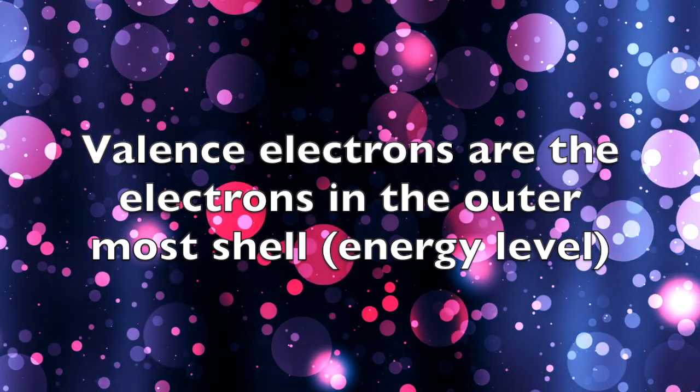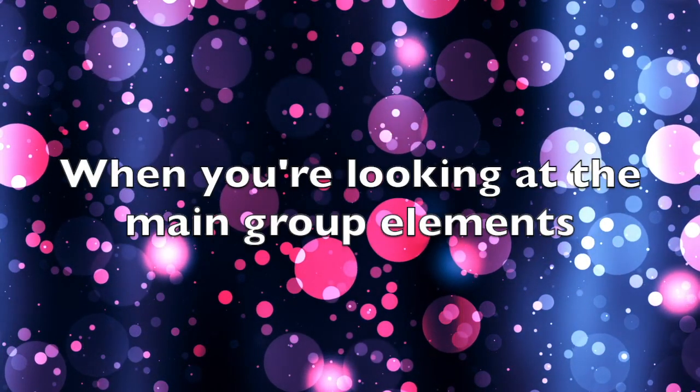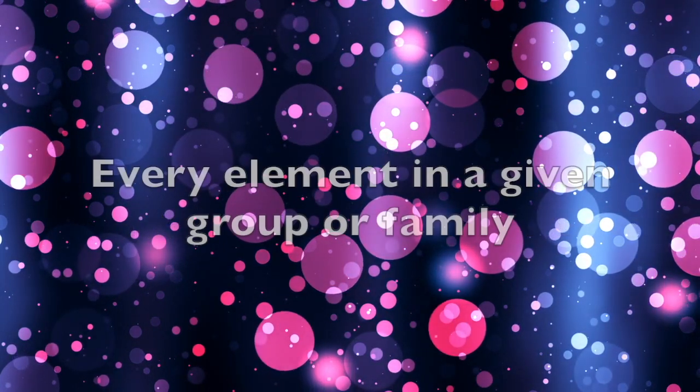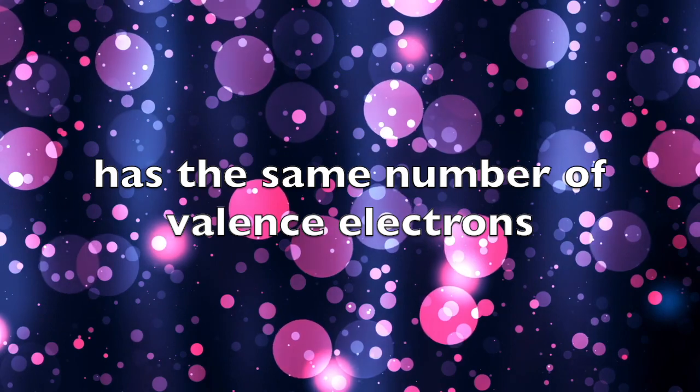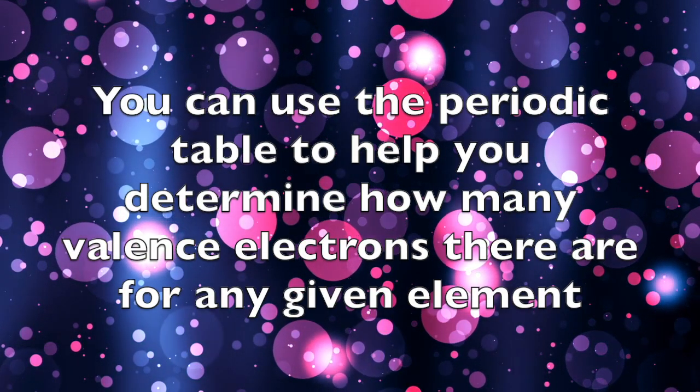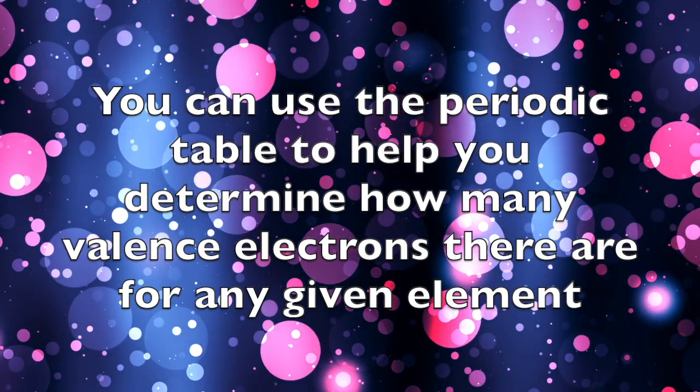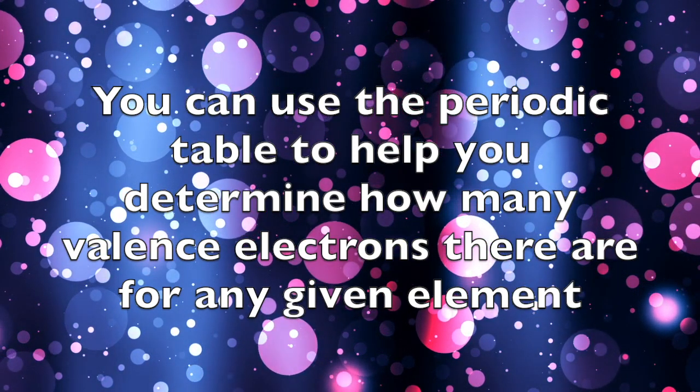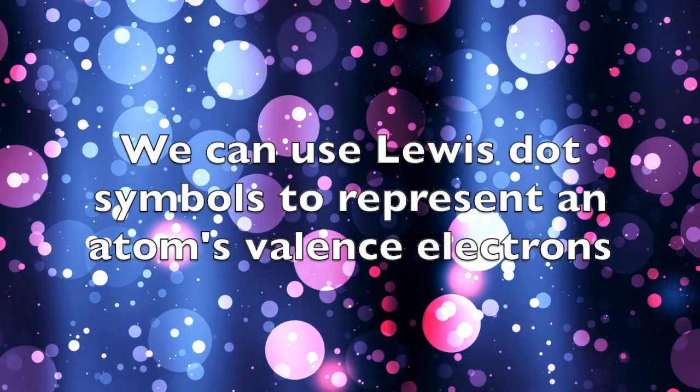In summary, valence electrons are the electrons in the outermost shell or energy level. When you're looking at the main group elements, every element in a given group or family has the same number of valence electrons. You can use the periodic table to help you determine how many valence electrons there are for any given element. We can use Lewis dot symbols to represent an atom's valence electrons.